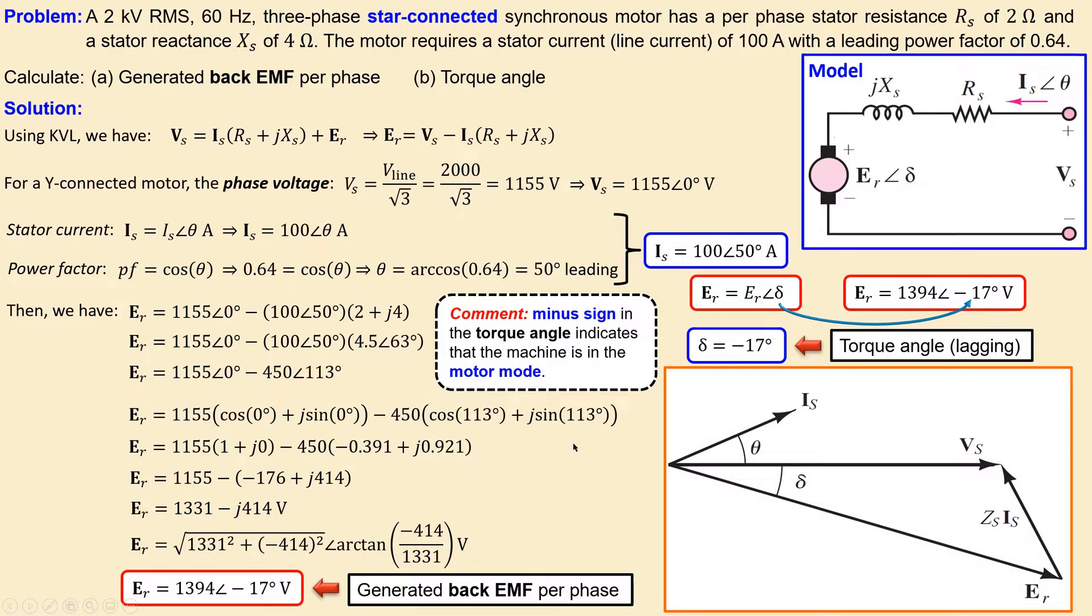Looking at the problem in diagram form, this is our voltage VS, the phase voltage. It has a phase orientation of zero degrees and an amplitude value of 1155 volts.